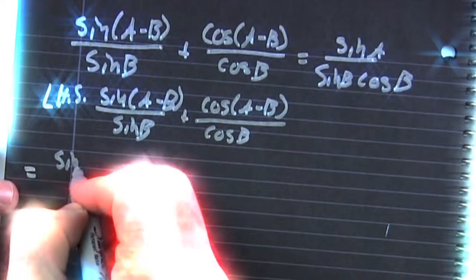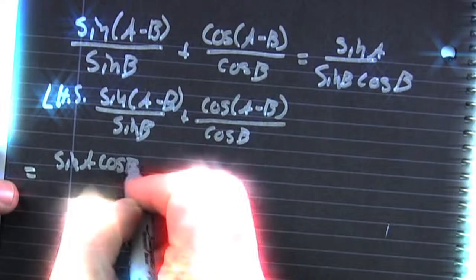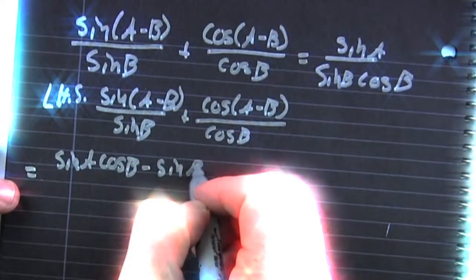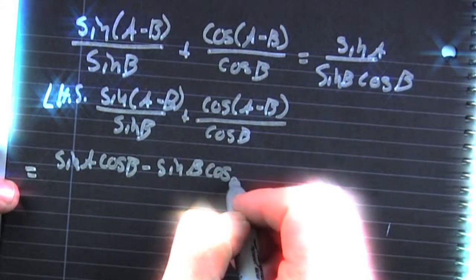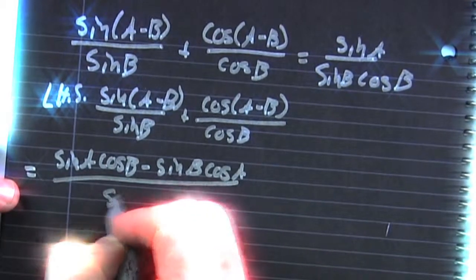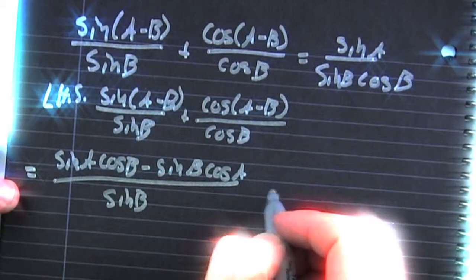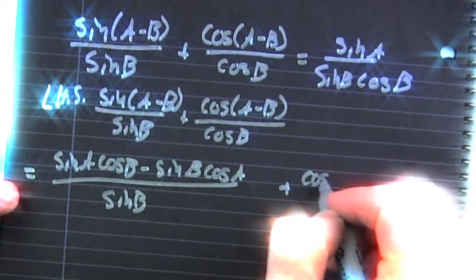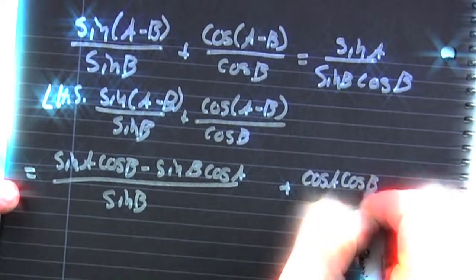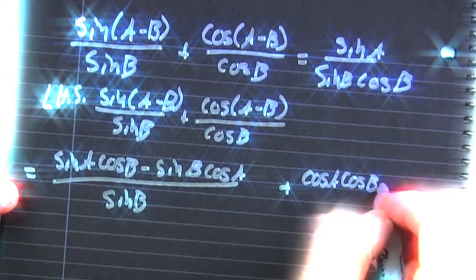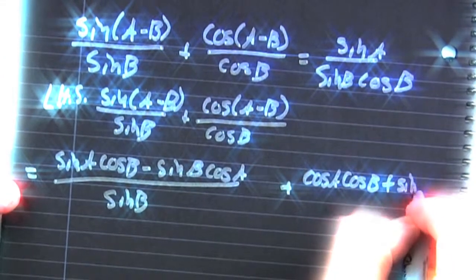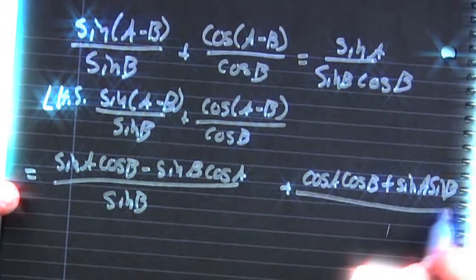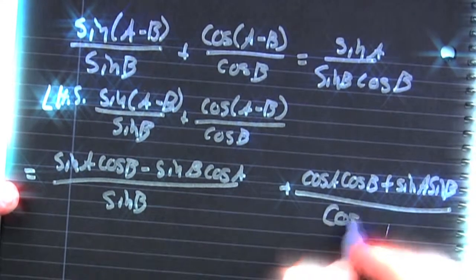We rewrote the left-hand side because we're not lazy. So now we expand that out. The sine of the difference of A and B is going to be the sine of A cosine B minus the sine of B cosine A. The cosine of A minus B is going to be the cosine A cosine B plus the sine of A sine of B, divided by the cosine of B.